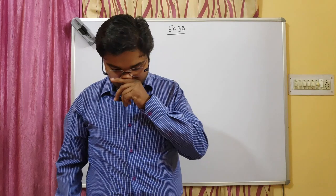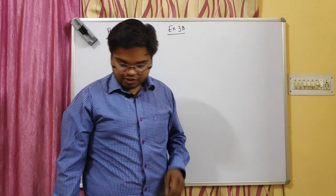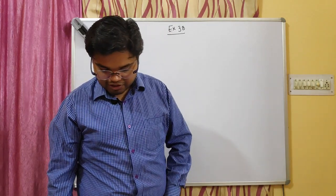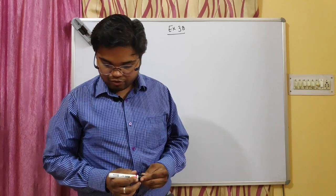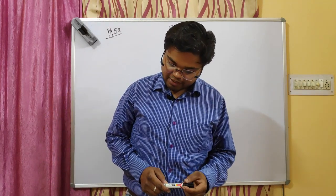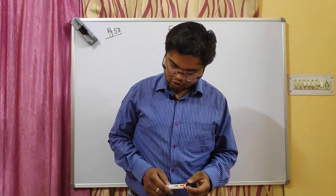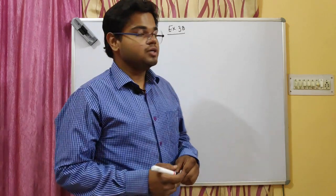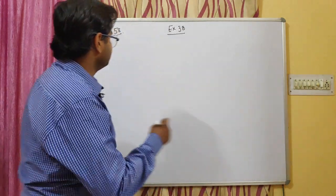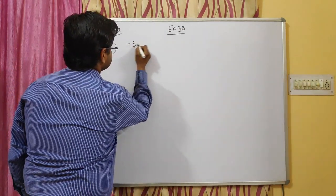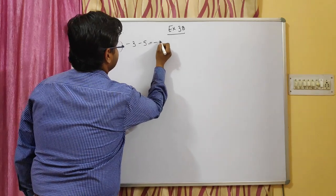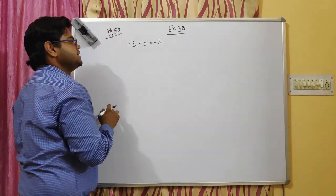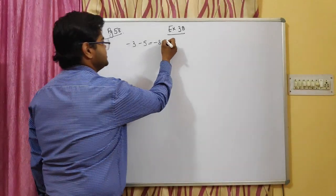The first question is: write T for true and F for false. Statement one: the sum of two negative integers is always a positive integer. If you look here, minus three plus minus five equals minus eight, and minus eight is a negative integer. So the first statement is false.